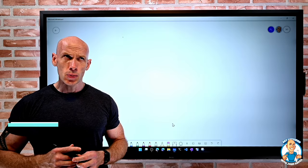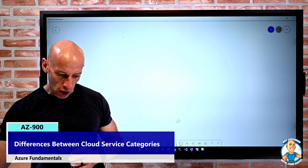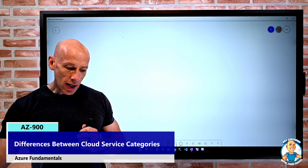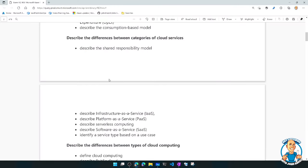In this lesson we're going to explore the differences between the different categories of cloud service. If we look at these skills objectives, what we're going to focus on in this particular lesson is describing the shared responsibility model, and then also looking at infrastructure as a service, platform as a service, serverless computing, and software as a service.